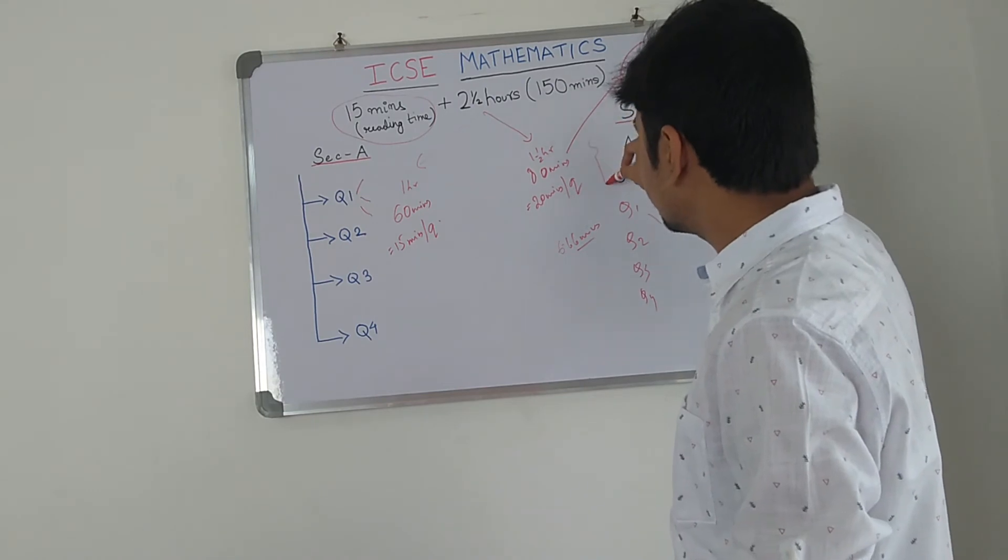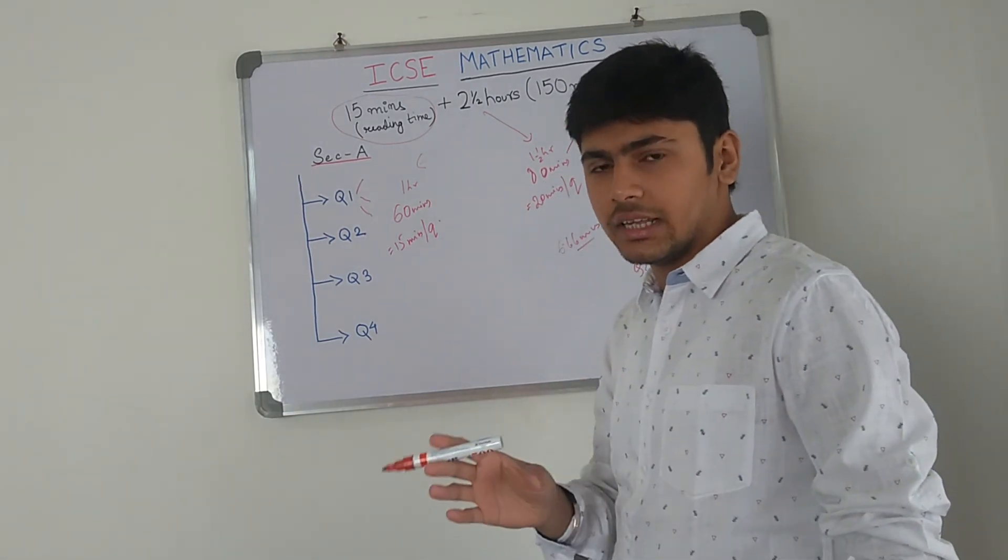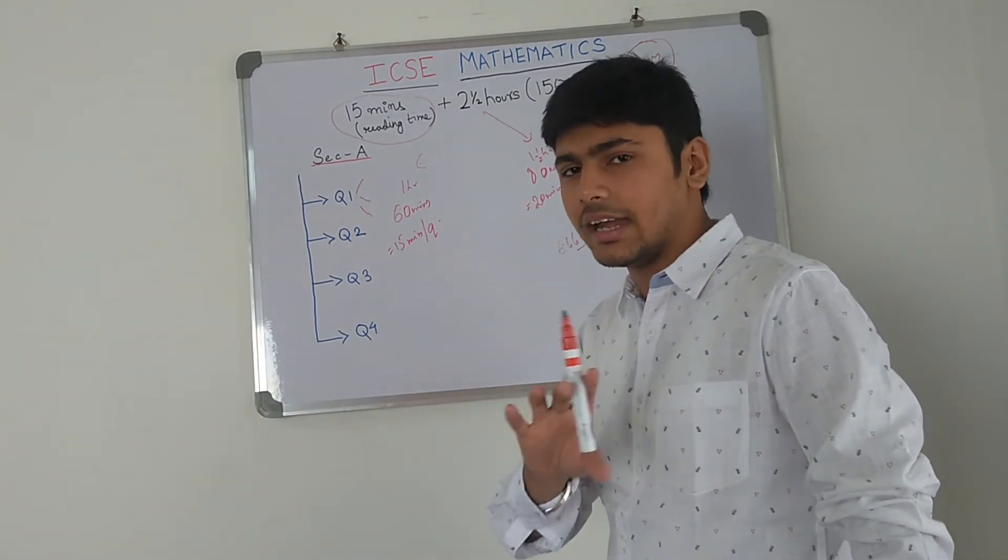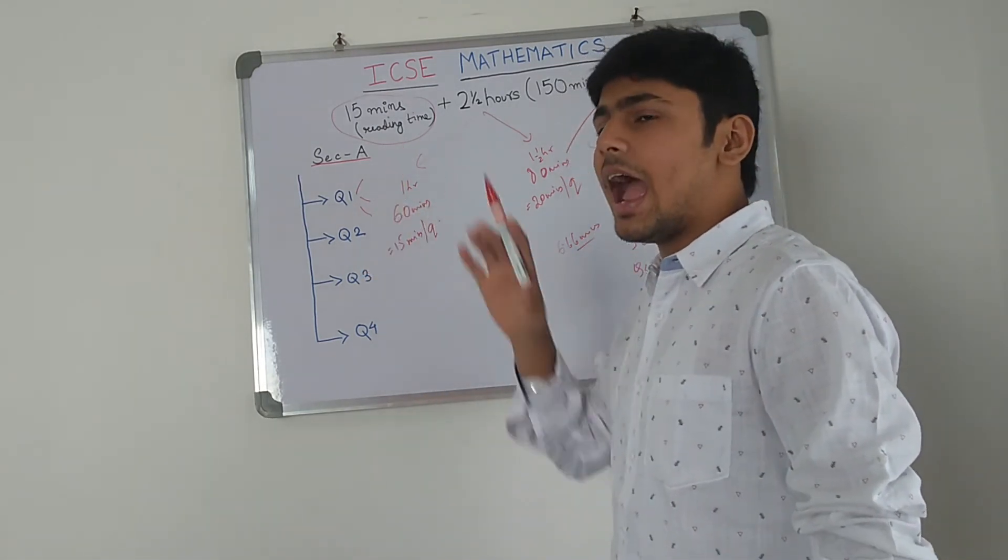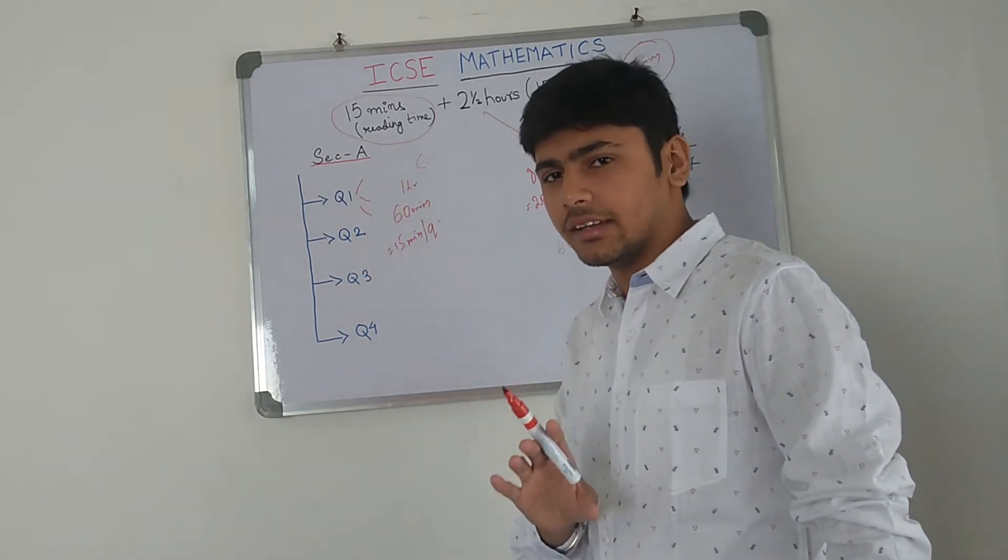So, select 4 questions first. Take 10 minutes thinking and planning. Then after that, study section A and try to attempt everything.